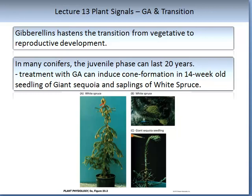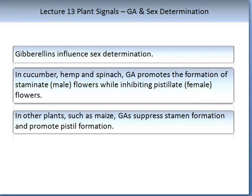Gibberellins can influence sex determination. For example, in cucumber, hemp, and spinach, GA promotes the formation of staminate male flowers while inhibiting the pistillate female flowers. In other plants such as maize, GA suppresses stamen formation and promotes pistil formation.